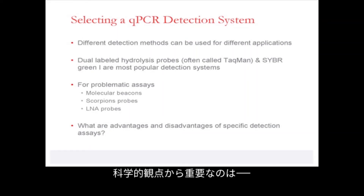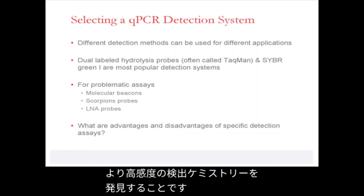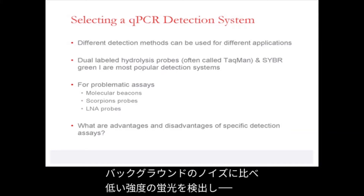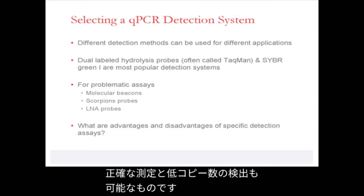More importantly from a scientific perspective is the drive to discover more sensitive detection chemistries that can detect low levels of fluorescence as compared to the background noise, and also accurate measurement and detection of low copy number.